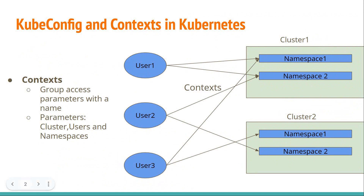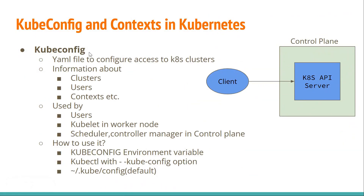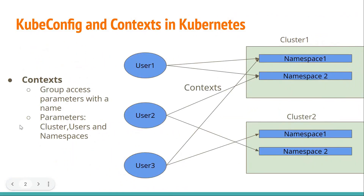We just need to set a particular context before executing corresponding kubectl commands. Now let us see how to create a kubeconfig file and how to access the cluster using it. We will also see how to create different contexts and how to use those contexts to access the cluster. Let us see all these things in the demo.